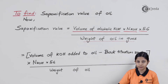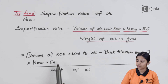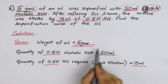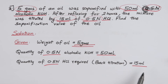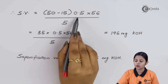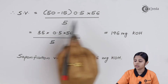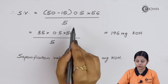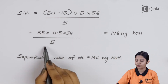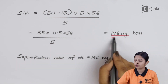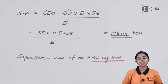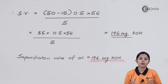Substituting all values: (50 − 15) × 0.5 × 56 / 5 = 35 × 0.5 × 56 / 5 = 196 mg of KOH. Thus the saponification value of the oil is 196 mg of KOH.